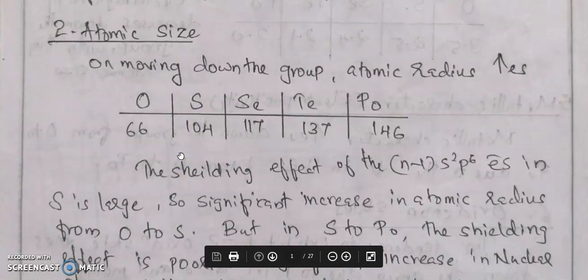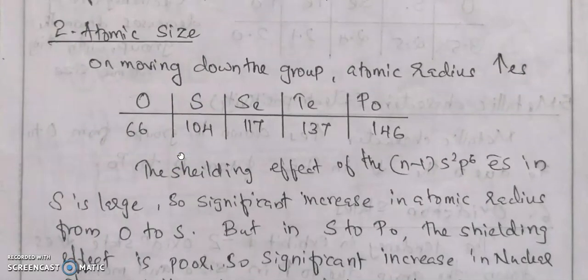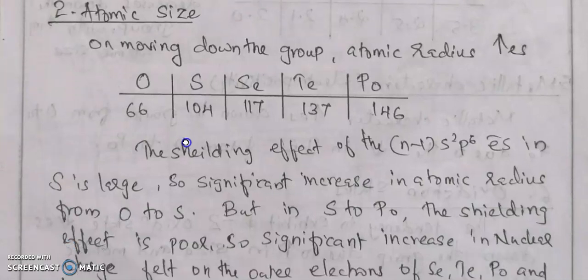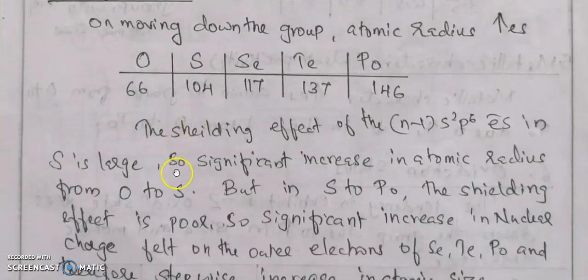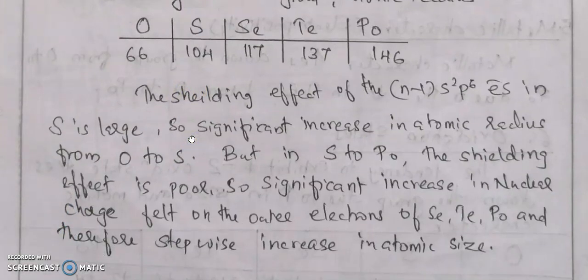The shielding effect of the (n-1) s² p⁶ electrons in sulfur is large, so there is a significant increase in atomic radius from oxygen to sulfur. From sulfur to polonium, the shielding effect is poor, so the increasing nuclear charge affects outer electrons of selenium, tellurium, and polonium, resulting in a stepwise increase in atomic size. The significant jump from oxygen to sulfur is due to the screening effect.